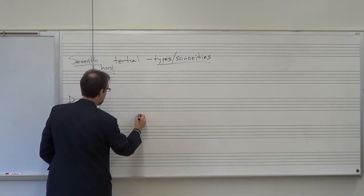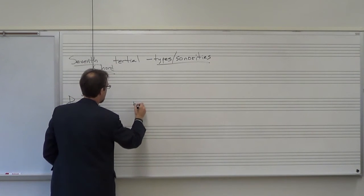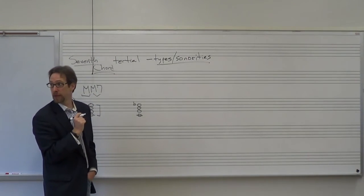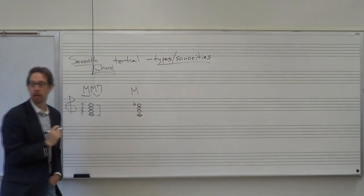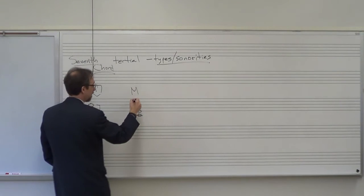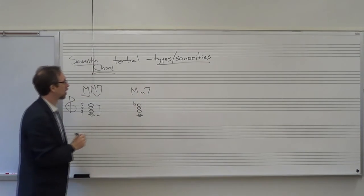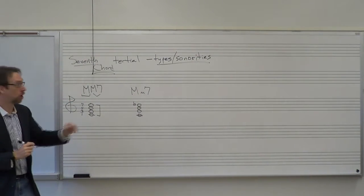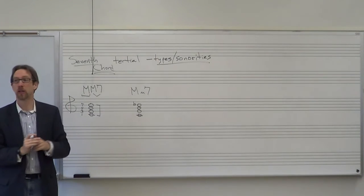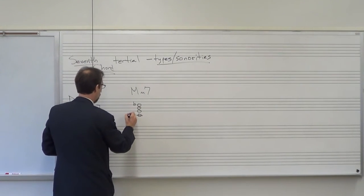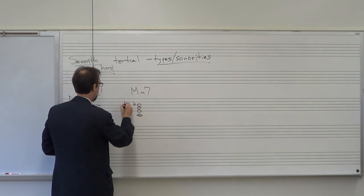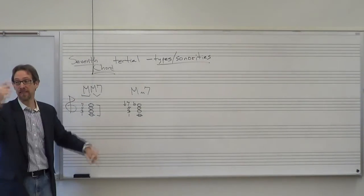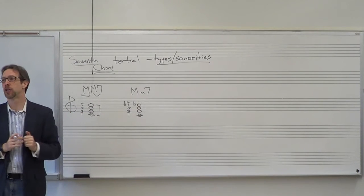Now think of C, E, G, and a B-flat. What kind of triad type do we have? It's a major triad. And what kind of seventh? C to B-flat is a minor seventh. So we call this a major minor seventh chord. The formula is 1, 3, 5, lowered seventh. You take any major scale — 1, 3, 5, and a lowered seventh — and you have a major minor seventh chord.